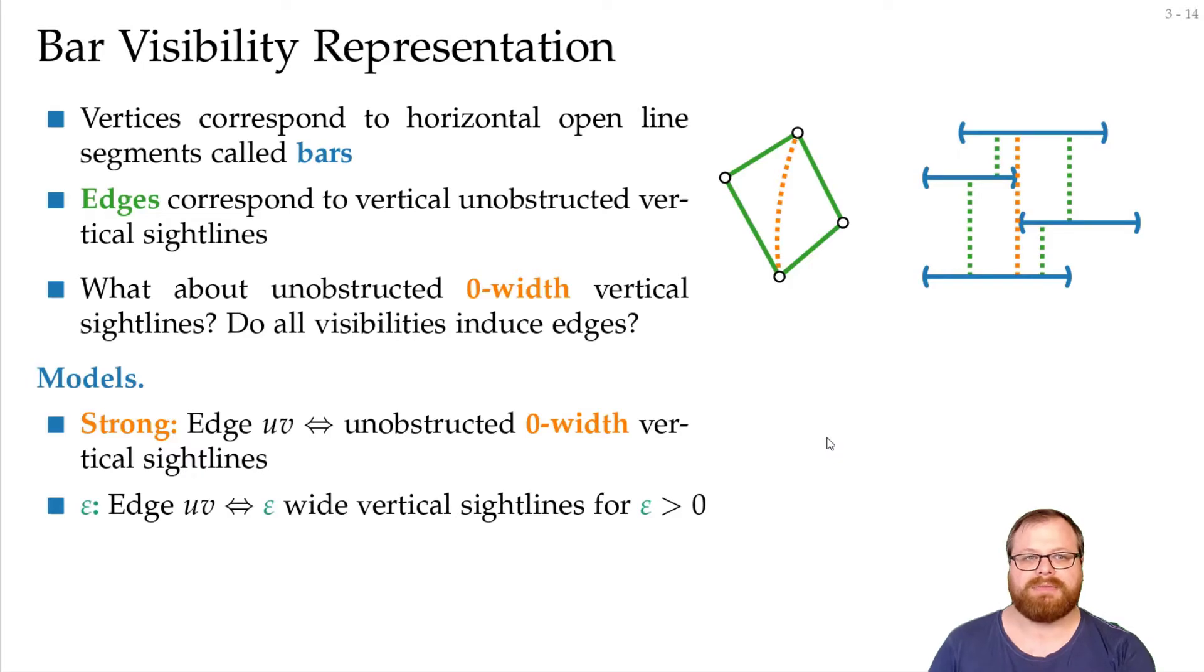In an epsilon bar visibility representation we have an edge if and only if there is some epsilon wide vertical sightline for some epsilon greater zero. So here this would not be an edge. Instead all the visibilities must have some width epsilon so we only have these four.